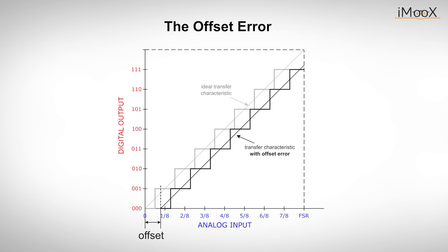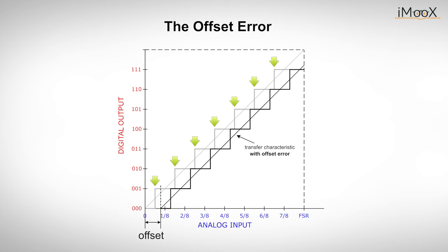The first error that commonly occurs with ADCs is the offset error. It is defined as the deviation of the actual transfer curve from the ideal transfer curve at the zero point of the analog input value. The offset error occurs as a constant absolute error for each point of the transfer function and can therefore be corrected easily. In other words, the offset error is the difference between the real and the ideal transition value that causes the first code change. For an ideal converter, an input value of one half LSB above zero should cause the first code change; if an offset error occurs, this transition happens either too early or too late.